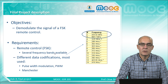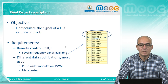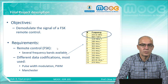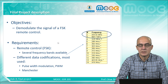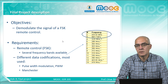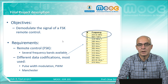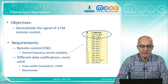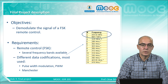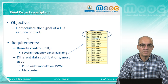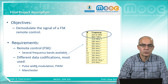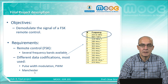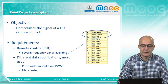You have to get one of the FSK type, which are usually used for cars or for high quality door control. The modulators use different types of codifications. The data normally use pulse width modulation or Manchester coding.